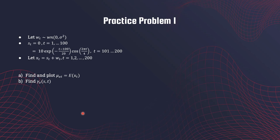Here is a practice problem for you. I've given you a time series process and you will find the mean and the auto covariance function for that process. I will also post this separately on Canvas as practice problems.